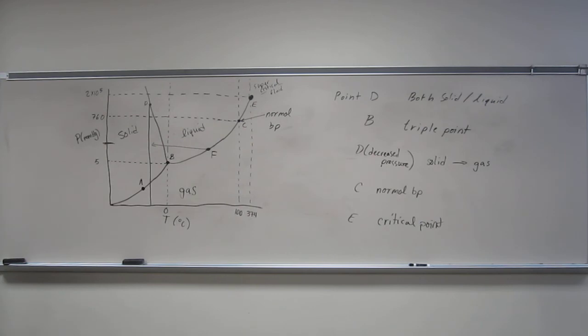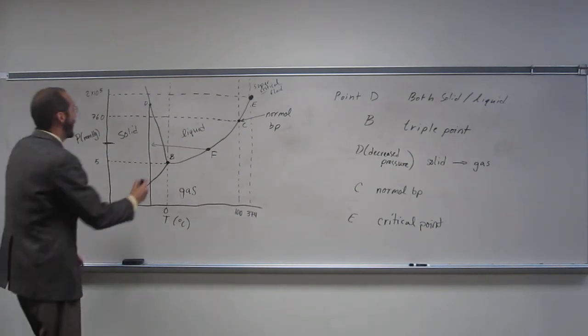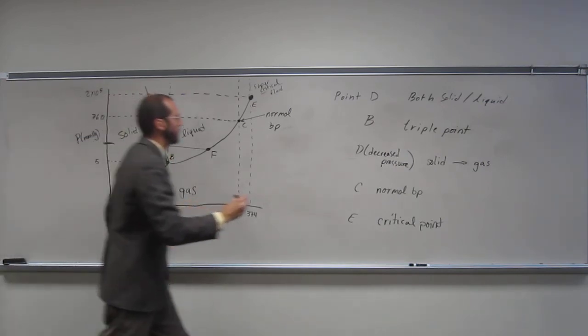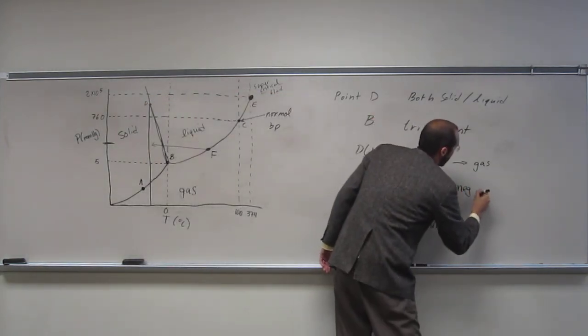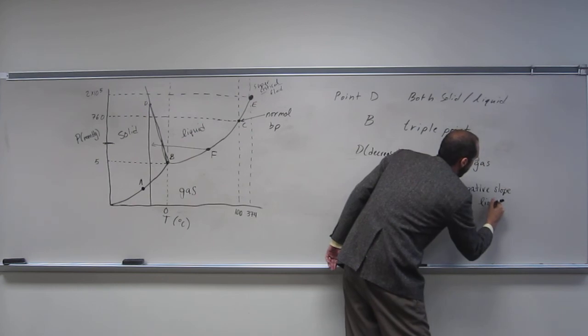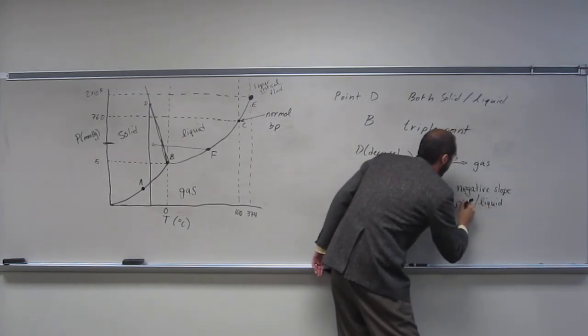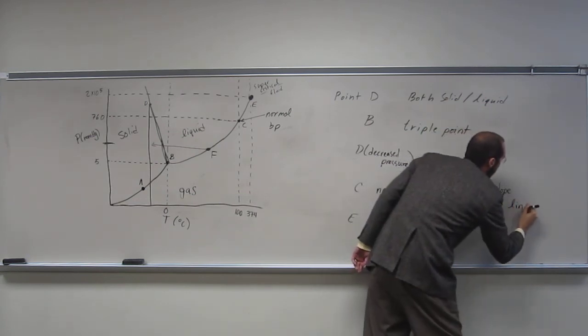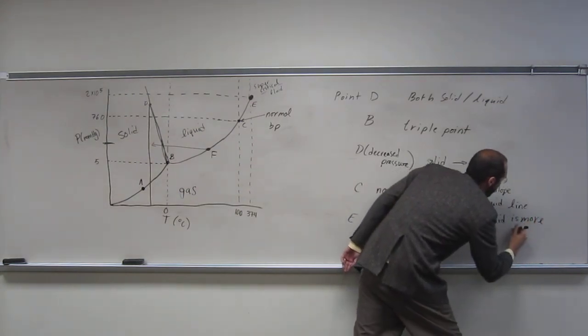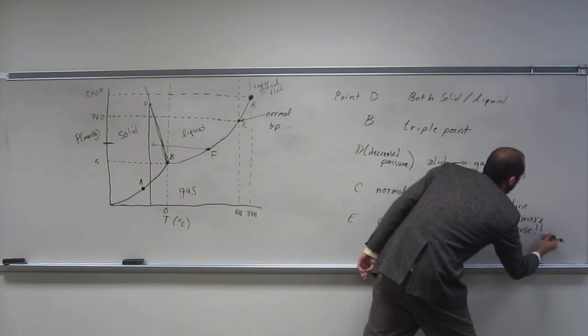And then one more question about this substance. Is it more dense in the solid or the liquid phase? The liquid, right? And why is that? Since you've got a negative slope here, in the line between the liquid and solid. So, negative slope of the liquid solid or solid liquid line. It means that the liquid is more dense.